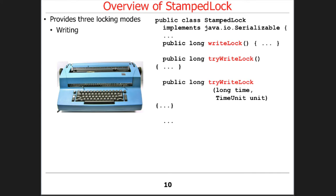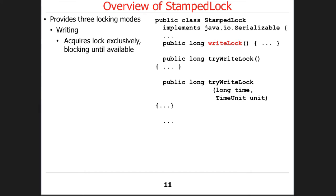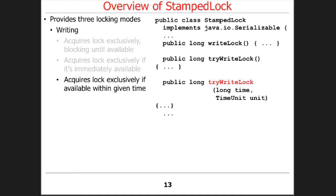Writing mode has a couple of methods associated with it. These methods all return something called a stamp value, which is just a Java long. Internally, that long contains a version number and a mode, indicating whether it's reading, writing, or another mode. The writeLock method will block until it can acquire the lock exclusively — pretty much like a regular synchronized statement. There's also tryWriteLock, which is non-blocking: if the write lock is available it grabs it immediately; if not, it returns zero. And there's a timed tryWriteLock that lets you wait up to a certain amount of time.